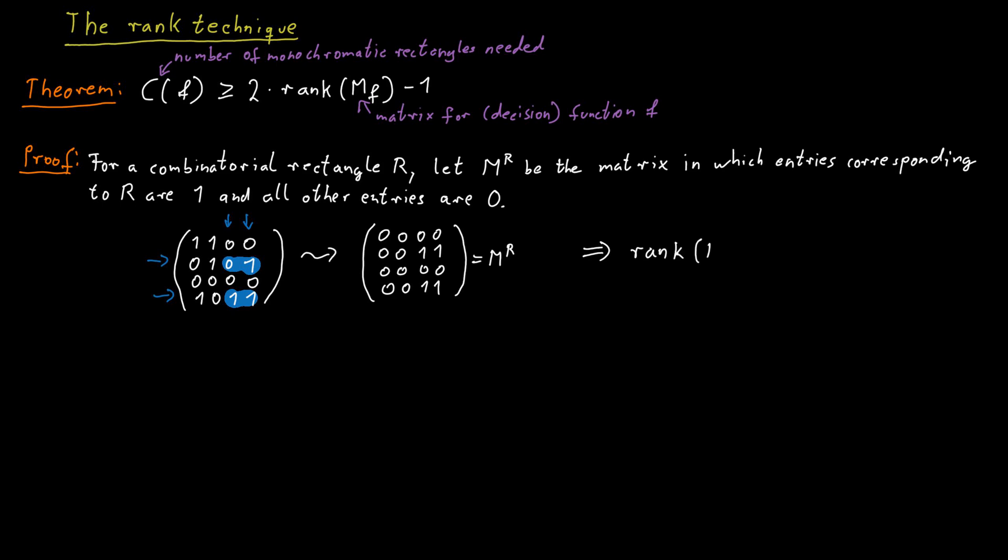And it's easy to see that the rank of such a matrix is equal to one. Let O be the set of monochromatic rectangles that cover all the one entries in our matrix that corresponds to the function F. Now we can write down this matrix MF to be equal to the sum of all these matrices that correspond to these combinatorial rectangles. So MF is just equal to the sum over all R in O of MR.